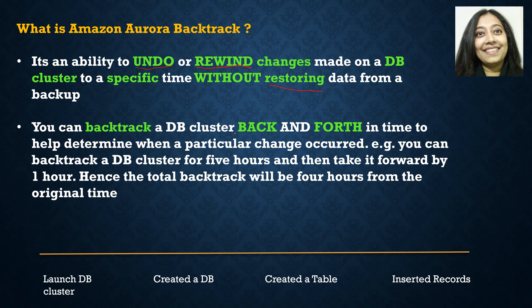You can backtrack a DB cluster back and forth in time to help determine when a particular change occurred. Let's say you made certain changes to your database today afternoon, and you feel you need to rewind all the changes to early morning today around 10 a.m. So you backtrack your database — from right now at 4 p.m. you go back to 10 a.m., backtracking by a few hours.